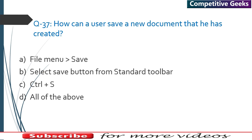Question 37: How can a user save a new document? Options include: using the File menu and clicking Save, clicking the Save button from the Standard toolbar, and pressing Ctrl+S. The answer is D — all of the above.